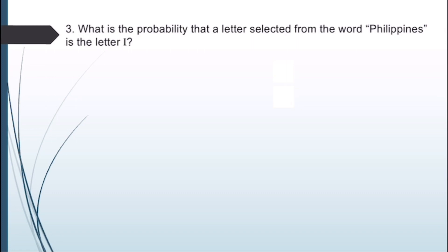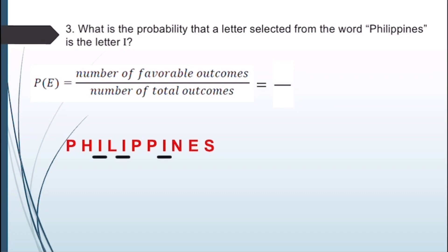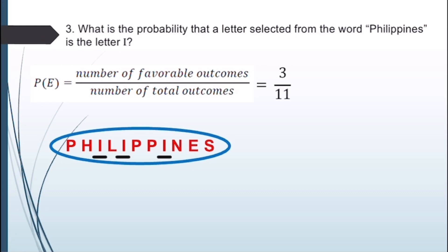For our third example: what is the probability that a letter selected from the word 'Philippines' is the letter I? Step one — find the favorable outcome: the word Philippines contains three letter I's, so the favorable outcome is 3. Step two — find the sample space: the word Philippines has eleven letters, so the sample space is 11. Therefore, the probability of selecting the letter I is 3/11, which is already in simplest form and is the final answer.